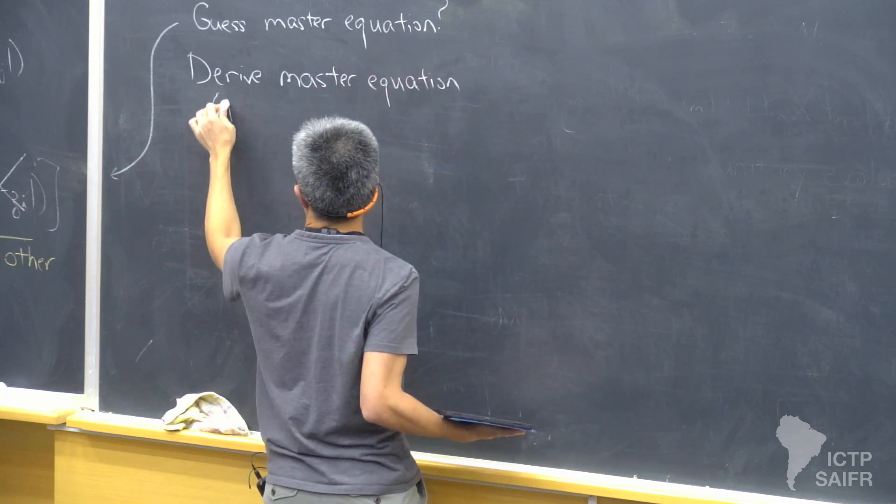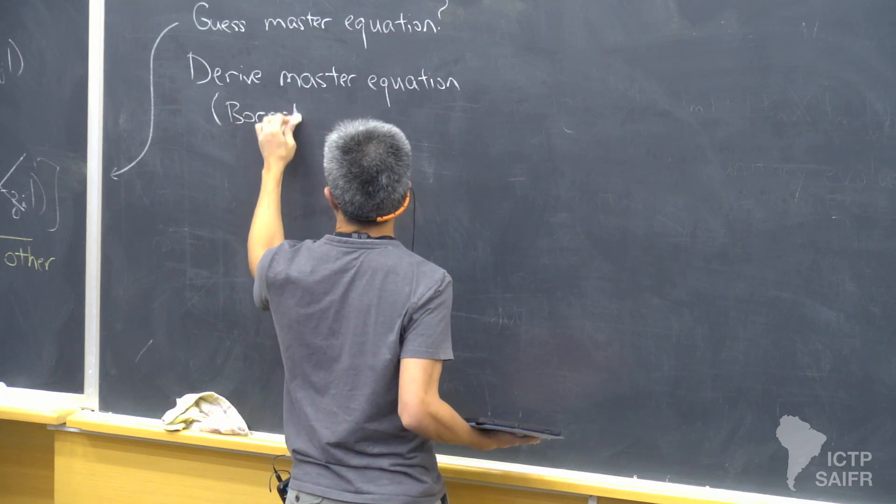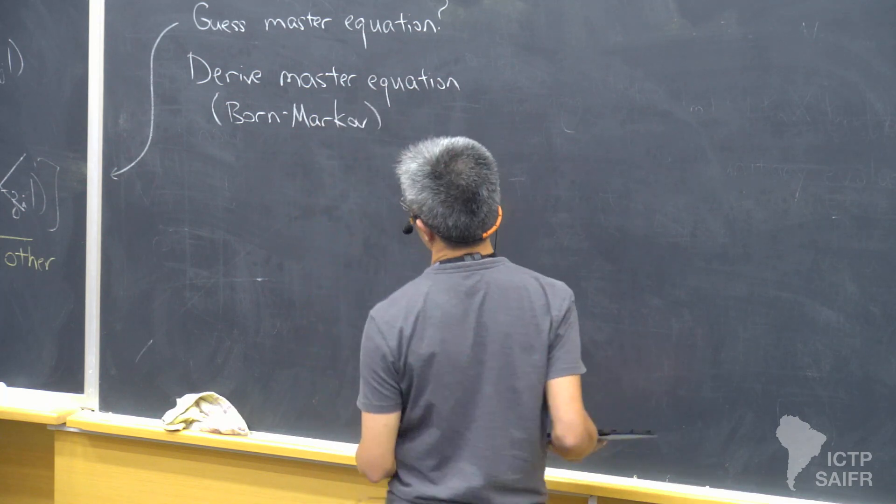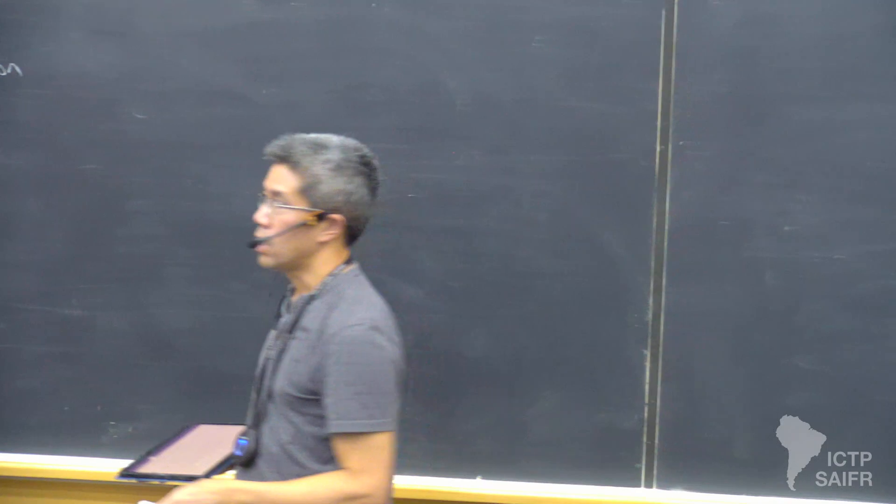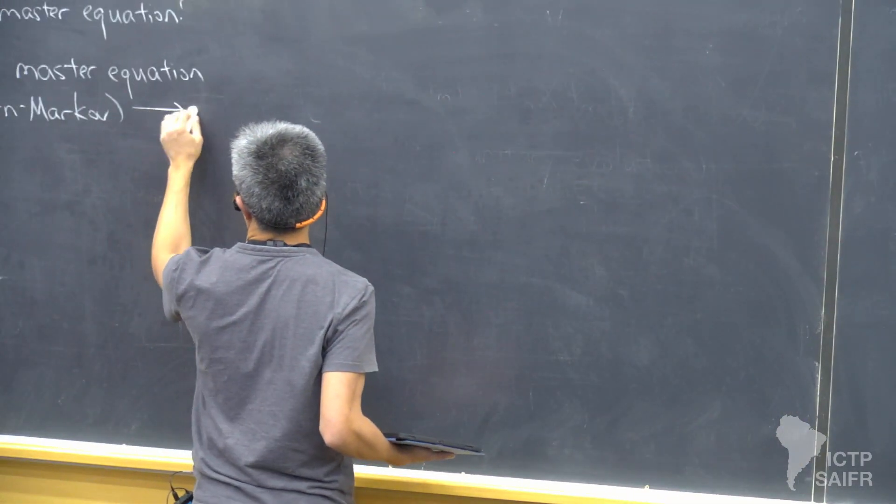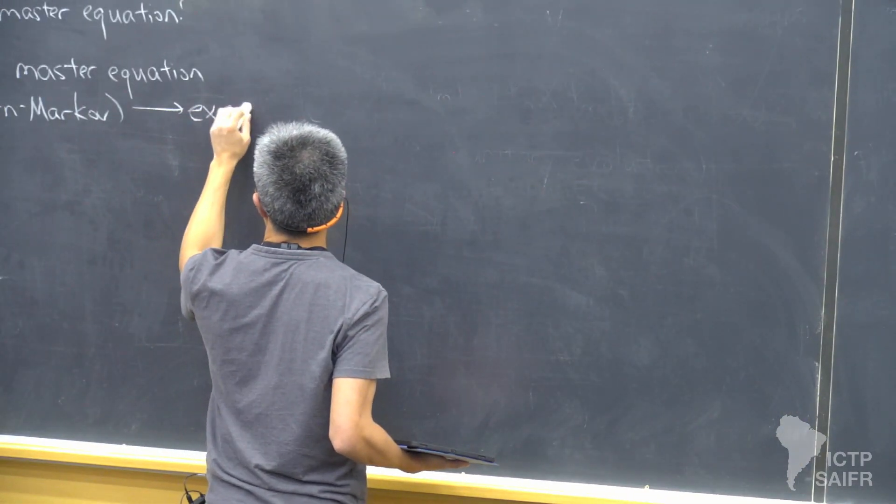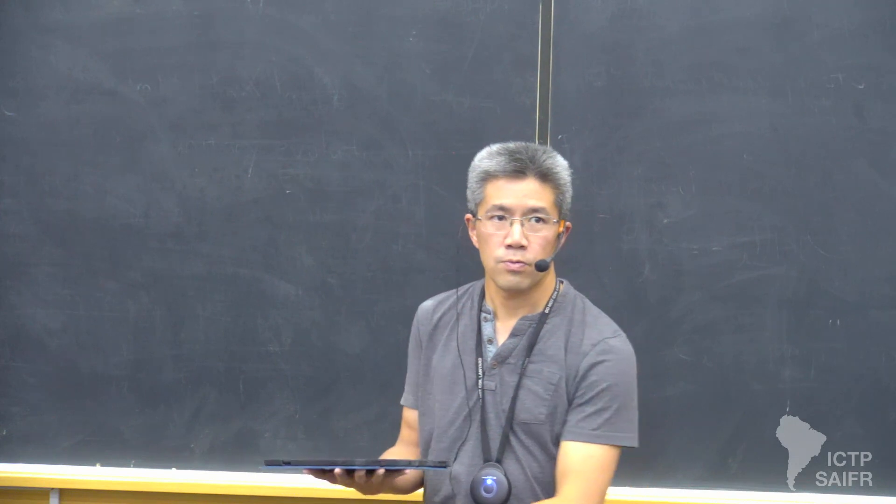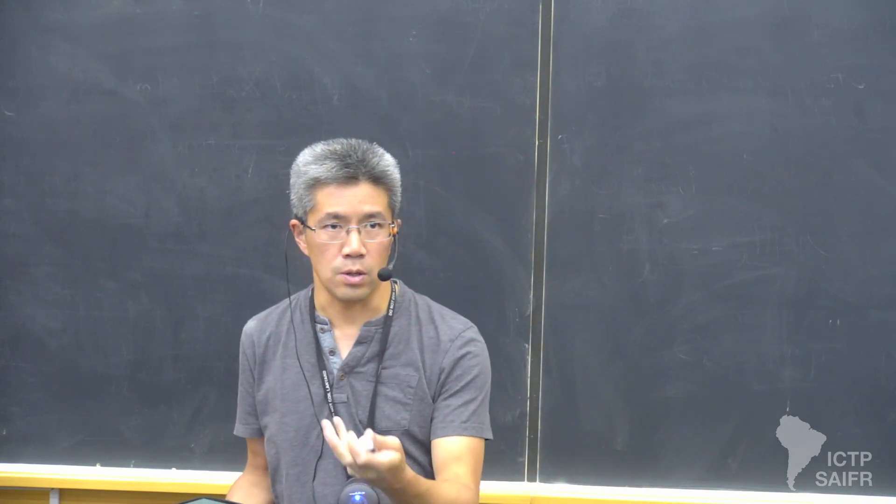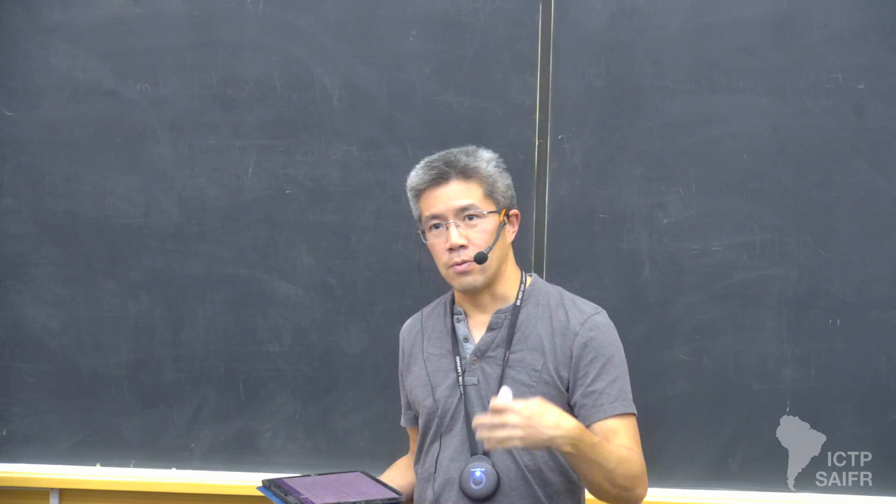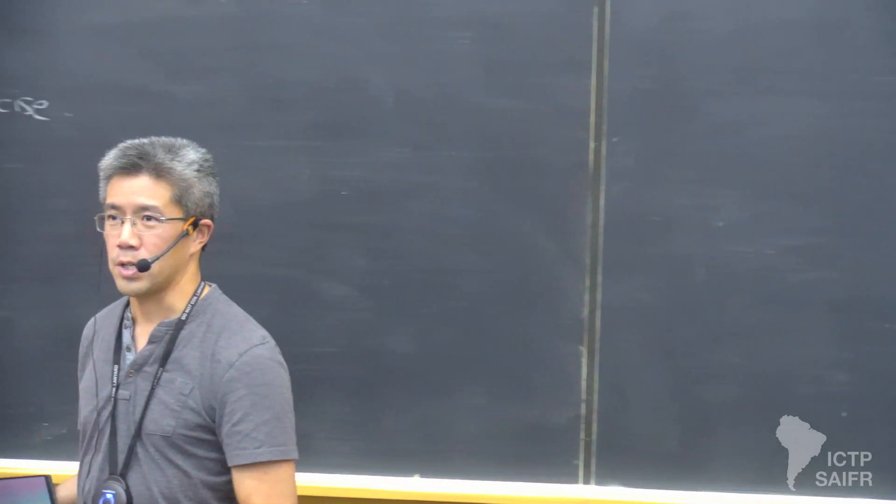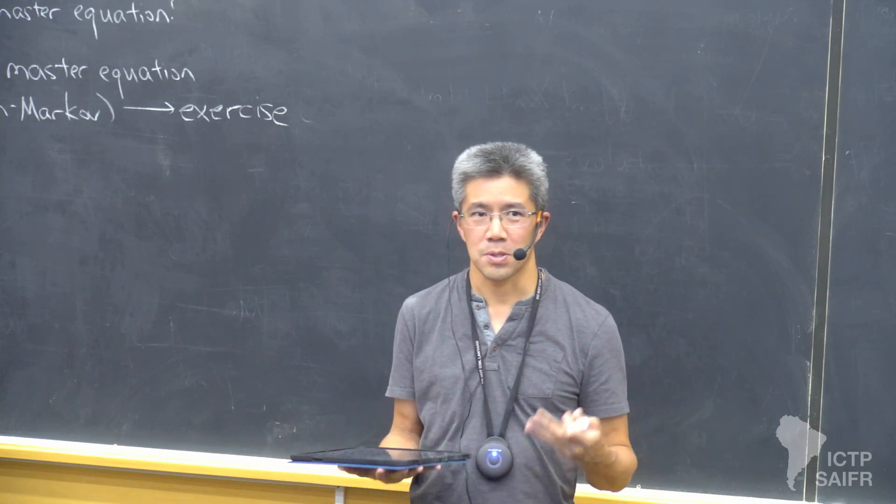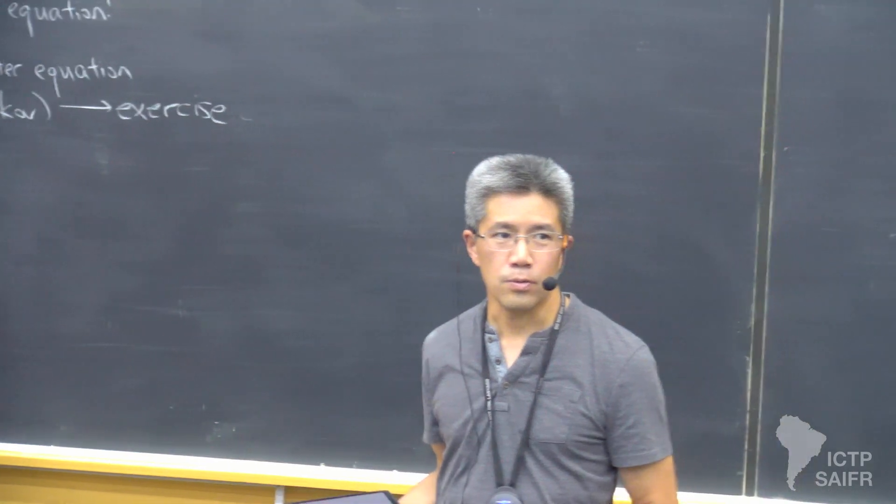On the other hand, if you don't like this idea of guessing, you can actually go and derive the master equation more formally using a pretty paradigmatic technique in quantum optics, which is called the Born-Markov approximation. So this is what I'll leave as the exercise. I've created a couple of pages of notes on the school webpage, where I step you through exactly what is the Born-Markov calculation.